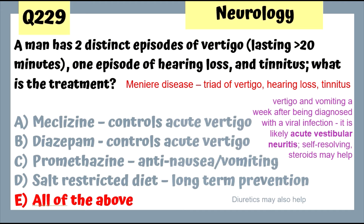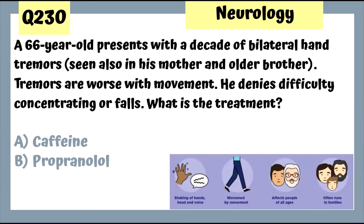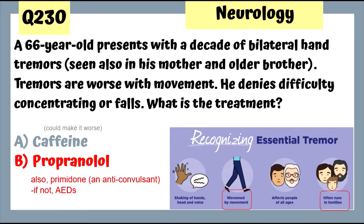A reminder: vertigo and vomiting a week after a viral infection is likely acute vestibular neuritis — steroids may help but it's self-resolving. Question 230: A 66-year-old with a decade of bilateral hand tremors also seen in his mother and older brother, worse with movement — this is essential tremor. Treatment is propranolol first-line; primidone is second-line. Anti-epileptic medications are alternatives; caffeine can make essential tremor worse.